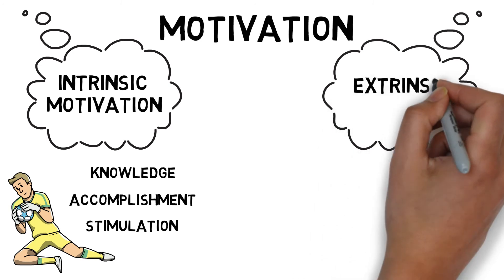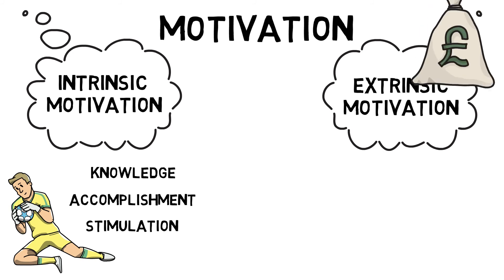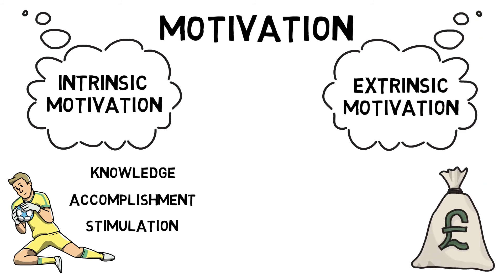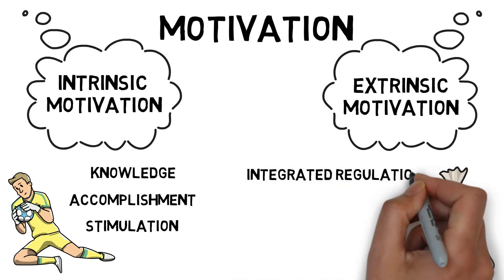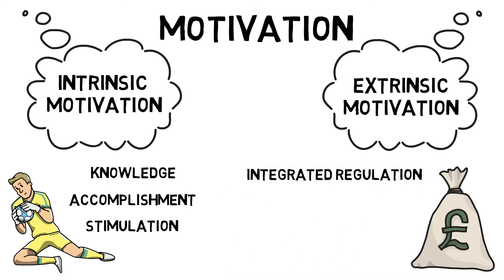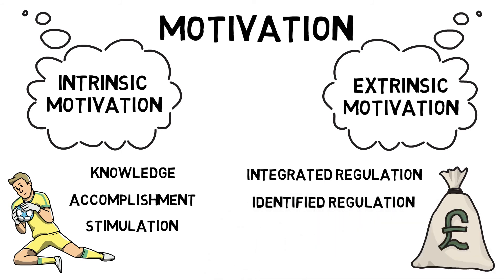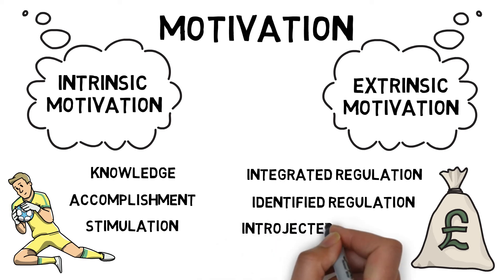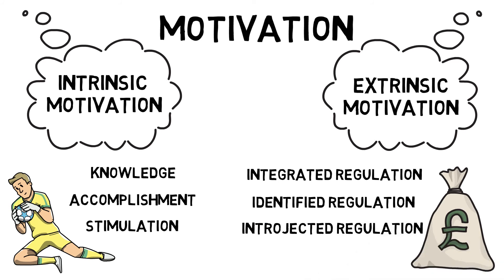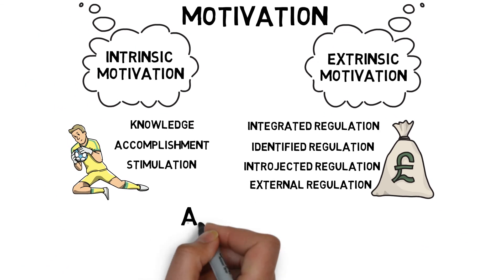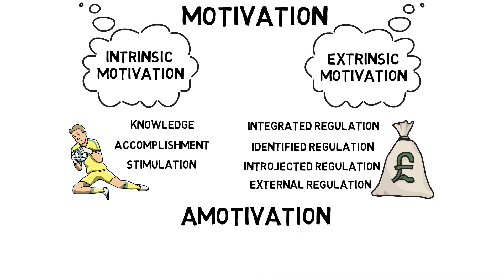Extrinsic motivation is motivation generated by external rewards, such as integrated regulation, where the outcome is valued rather than the interest in the activity solely for itself. Identified regulation are behaviors that are accepted and performed willingly, even if the activity is unpleasant. Introjected regulation are behaviors motivated by internal pressures. And external regulation, which are behaviors controlled by external sources and rewards. Amotivation is neither intrinsically or extrinsically motivated.